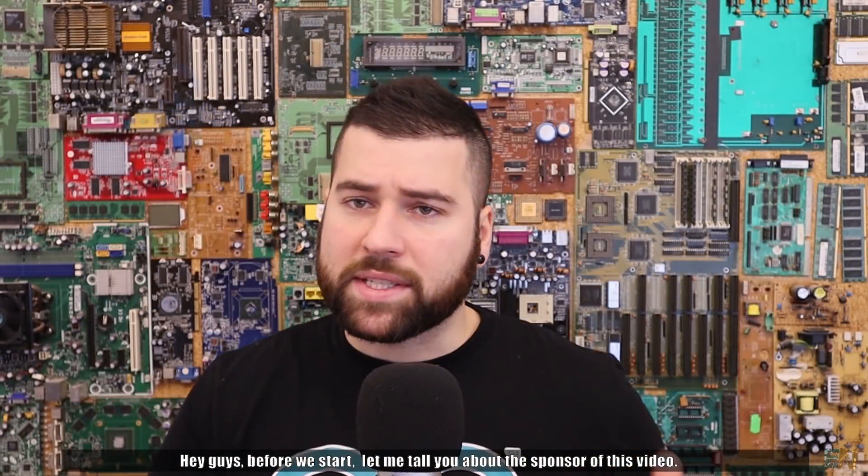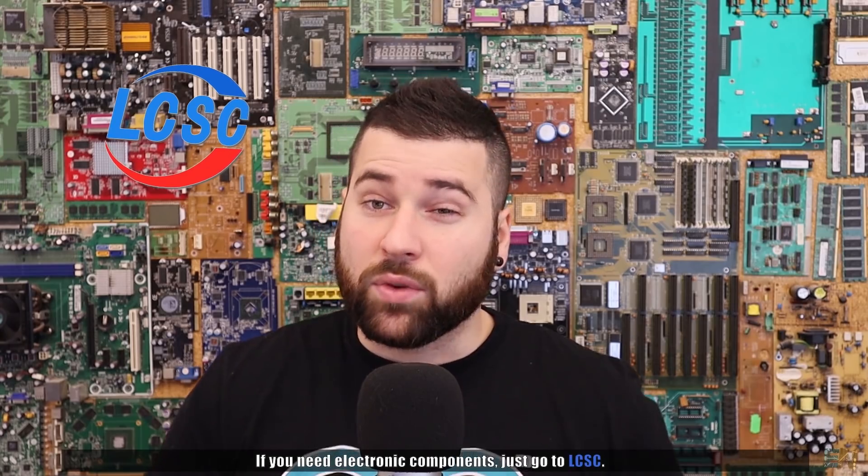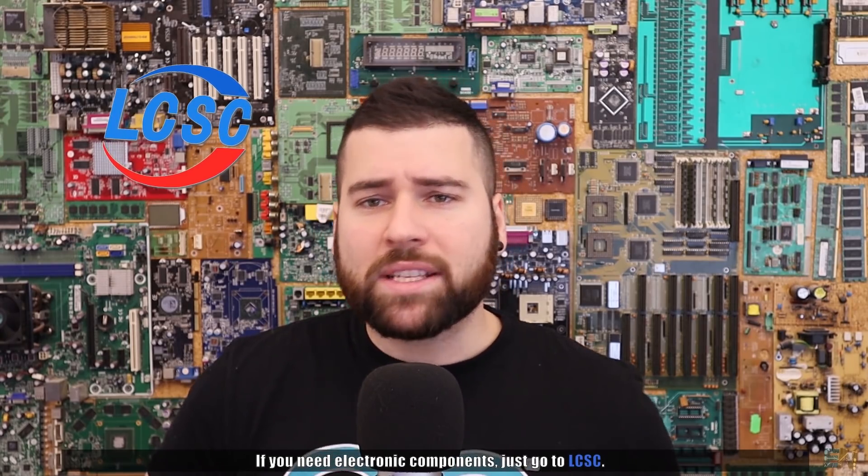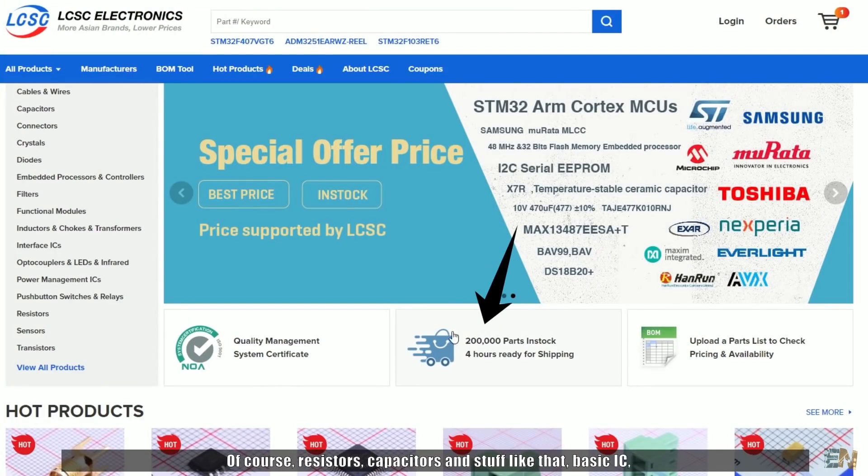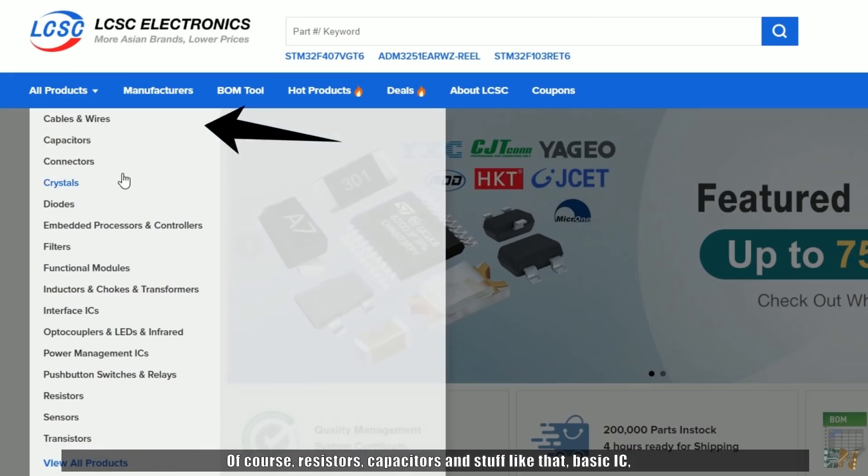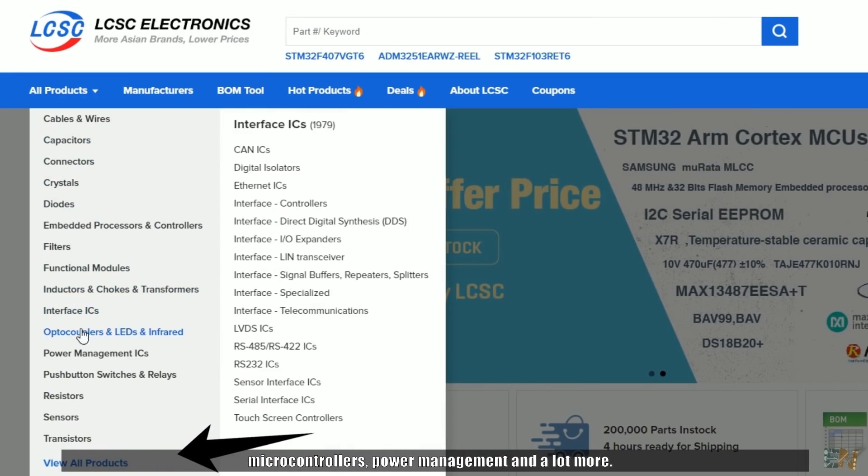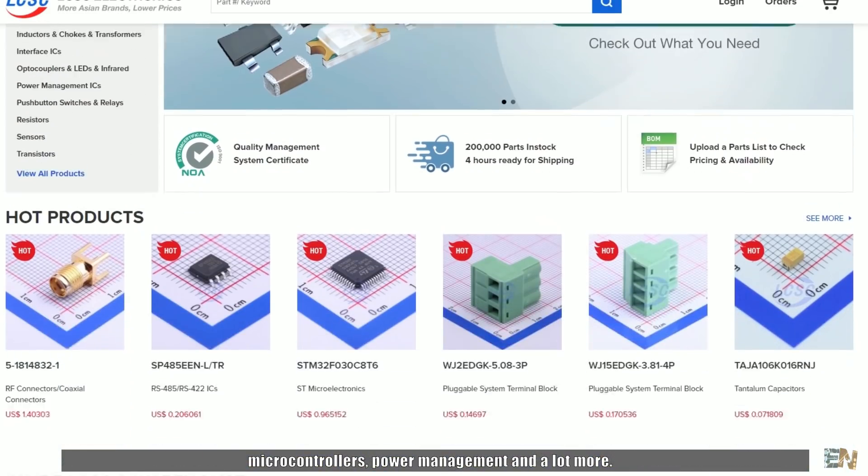Hey guys, before we start, let me talk about the sponsor of this video. If you need electronic components, you must go to LCSC. They have more than 200,000 components of all kinds. They have basic resistors, capacitors of course, and also basic ICs, microcontrollers, power management and much more.